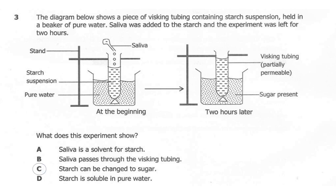The correct answer here is C: starch can be changed to sugar. Once the starch has been added to saliva, saliva contains an enzyme. Once we have starch present in the visking tube, sugar will then diffuse from the visking tube into the water. So diffusion is taking place. That's why we say starch can be changed to sugar.